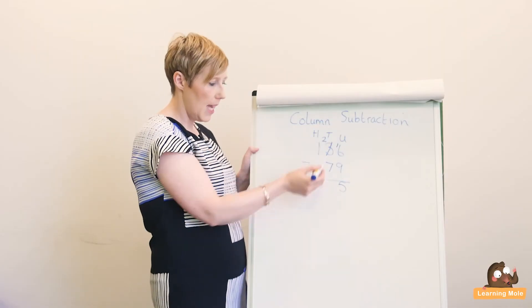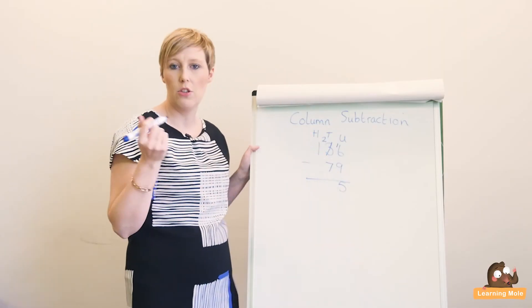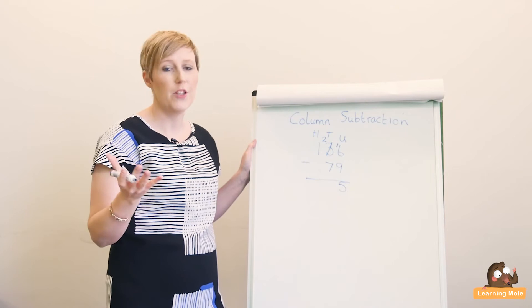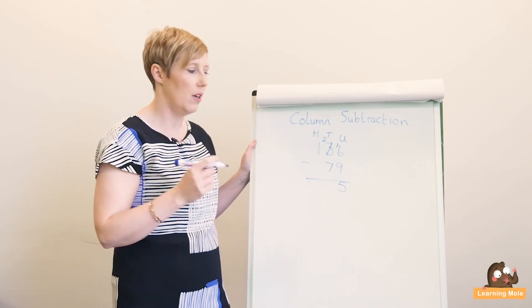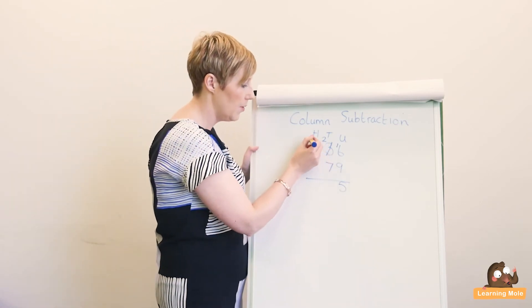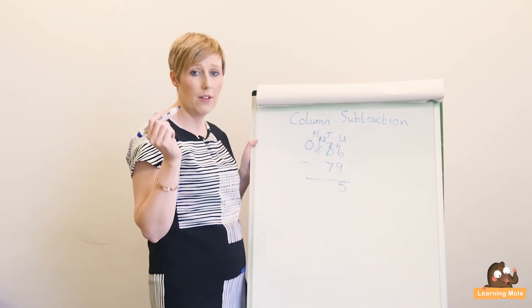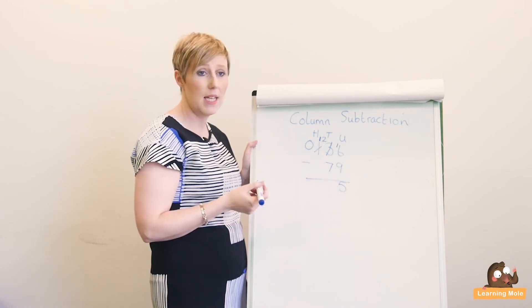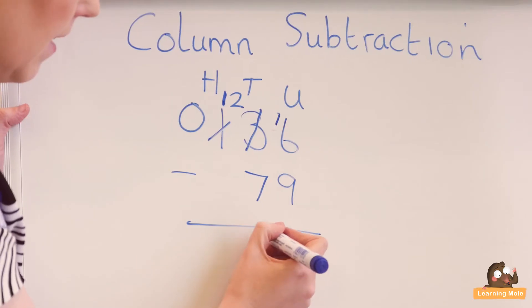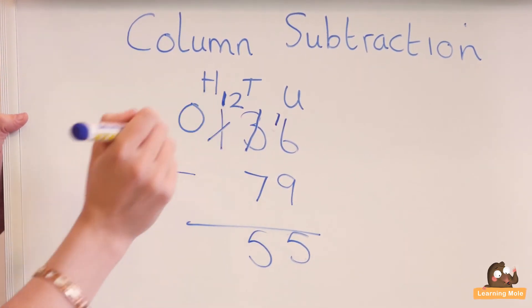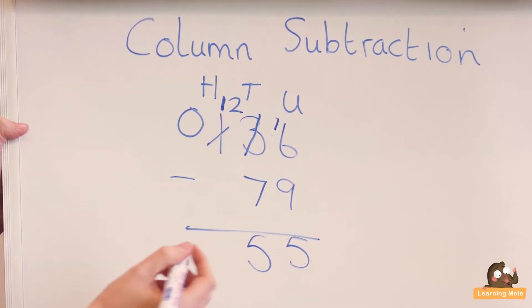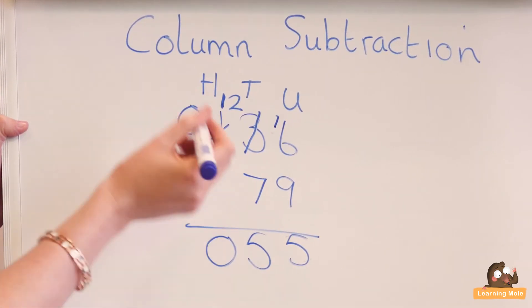Now tens: two take away seven. Do you have enough? No, don't have enough again. So I'm going to have to borrow now from the hundreds. That leaves me with zero in there, and now I've got 12. Again, it's 12 tens, it's 120 take away 70. Can I do it? Yes I can. It leaves me with 5 tens. And now I've got zero in the hundreds, so I have nothing to take away, so I end up with zero.